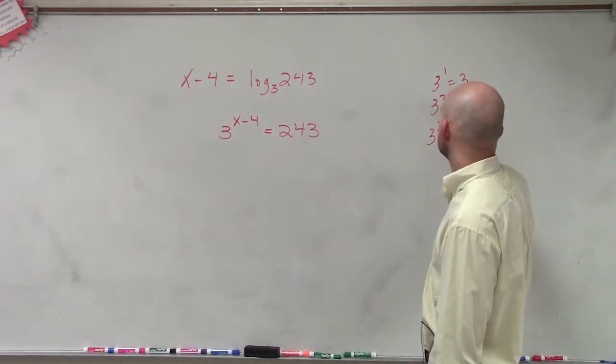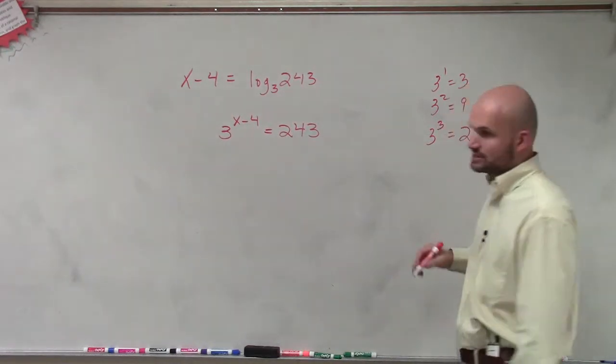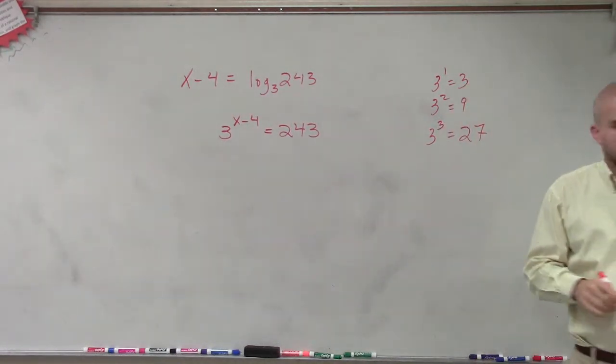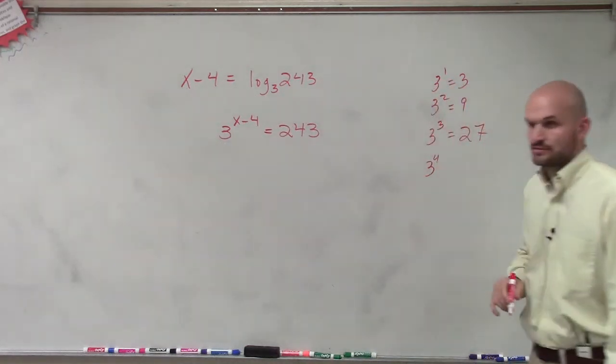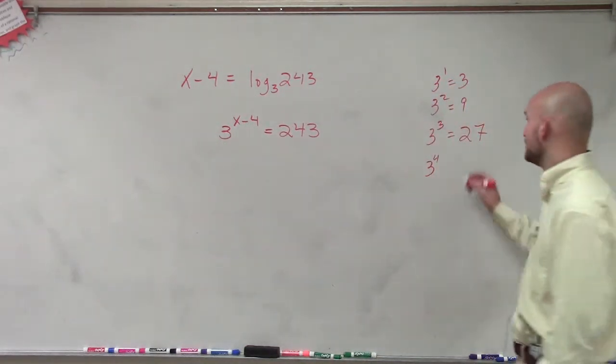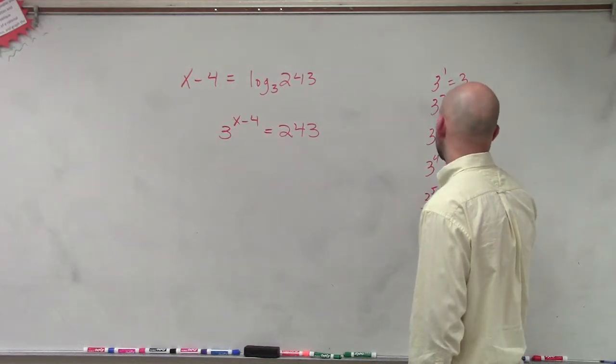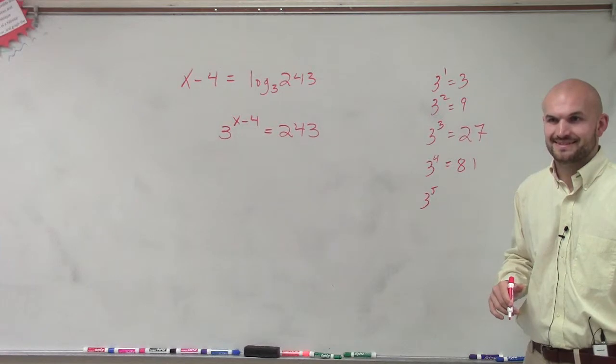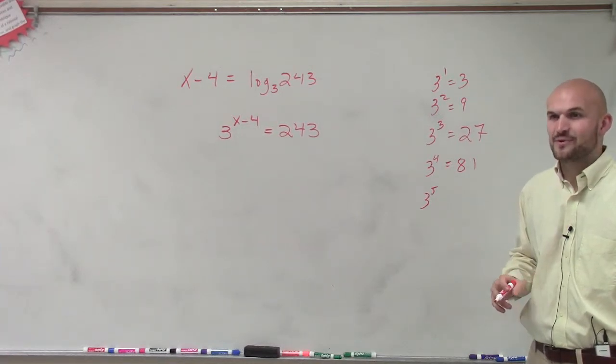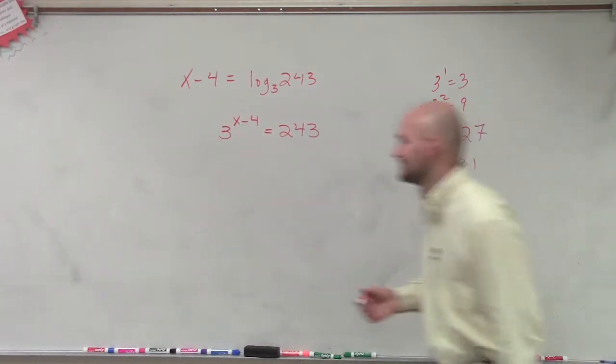3 cubed equals 27, right? So then 3 to the fourth power is going to be 81, and 3 to the fifth power equals 243.